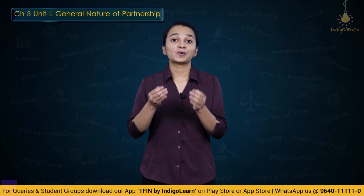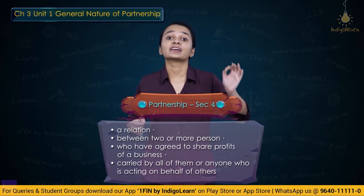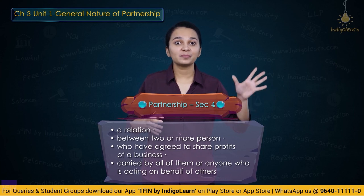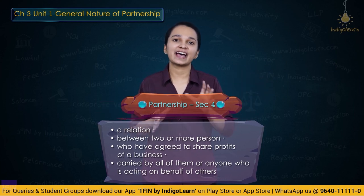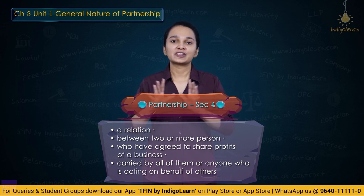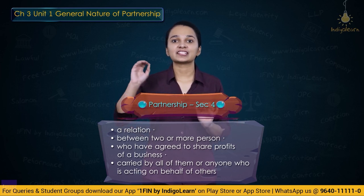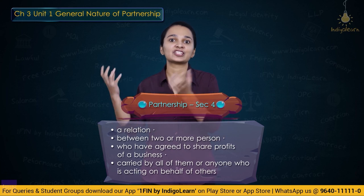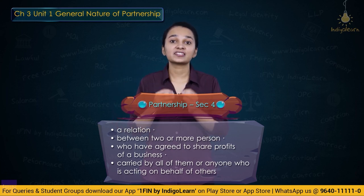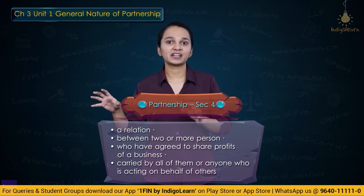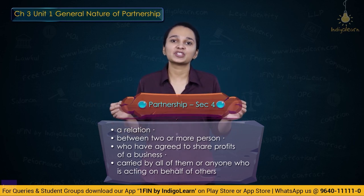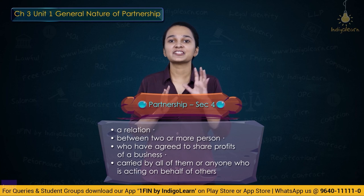Let us now do a quick recap of whatever we have understood in this particular unit. What is partnership? Partnership is a relation between two or more persons who have agreed to share profits of a business carried on by all or anyone acting for all. This was the definition given in section 4. The relation between partners is partnership, the persons are individually called partners and collectively called a firm, and the name with which the business is run is called the firm name.